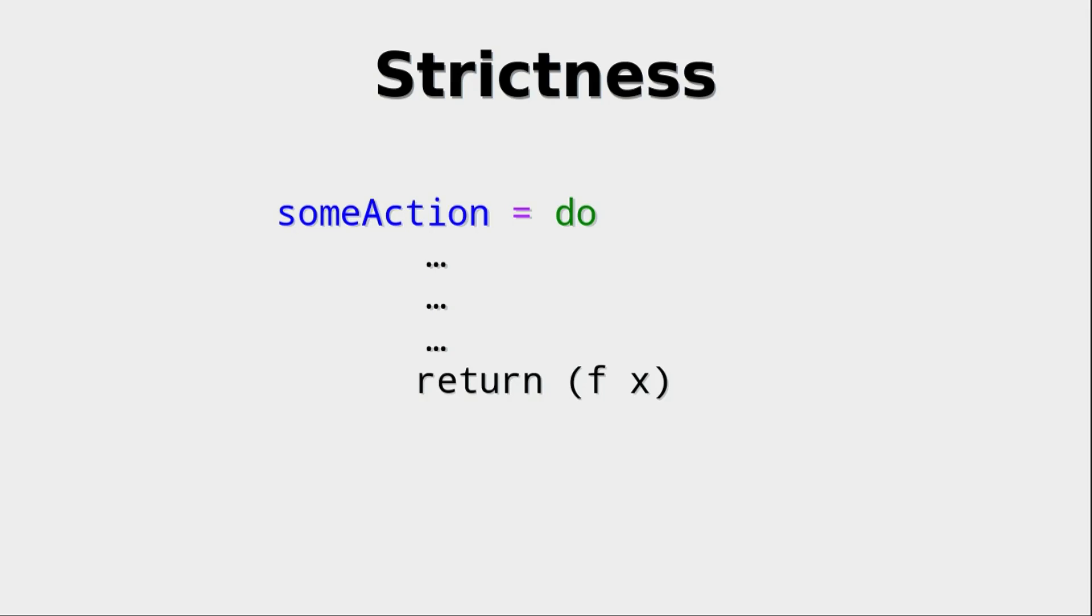Yet, this isn't the case in Haskell. Simply because everything is lazy. So what we return in this case, f of x, is lazy. So if x is lazy, and f is not strict in its first argument, then we return some thunk, which might be huge. So we don't really want that.